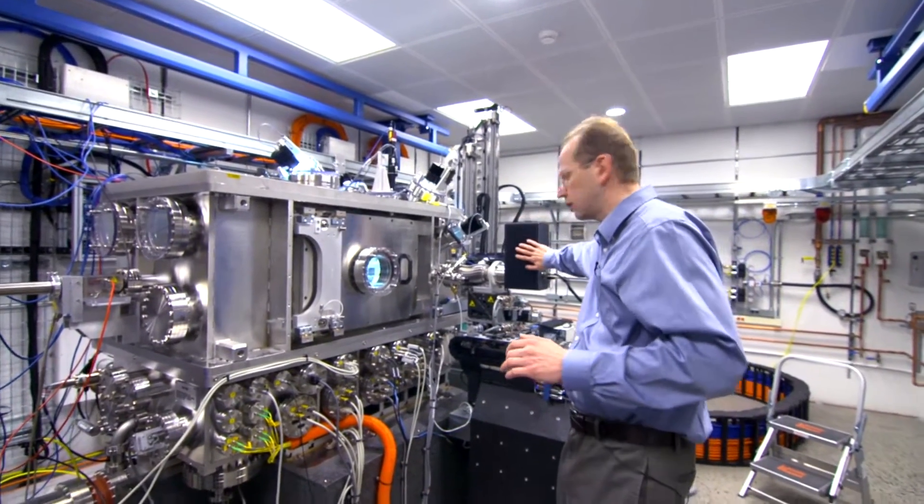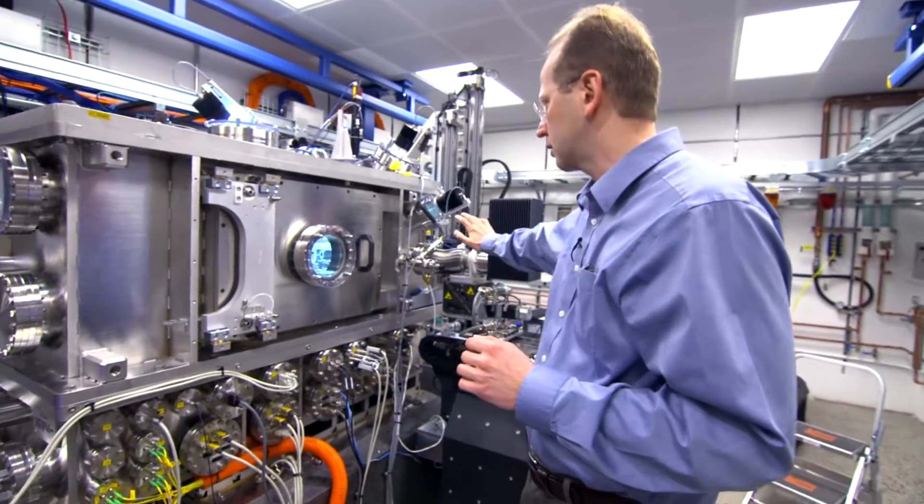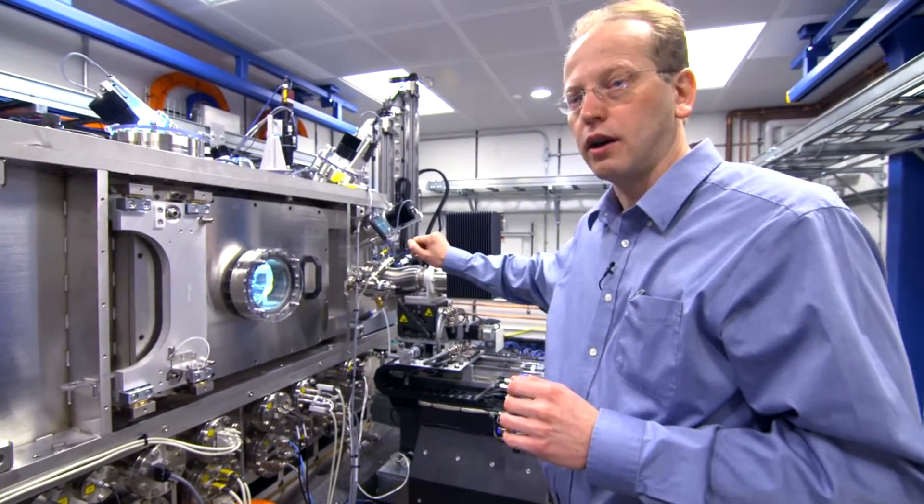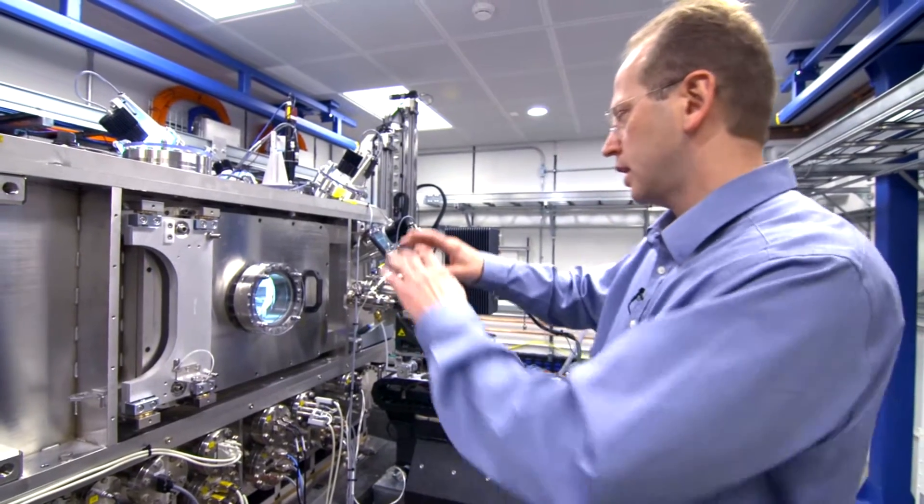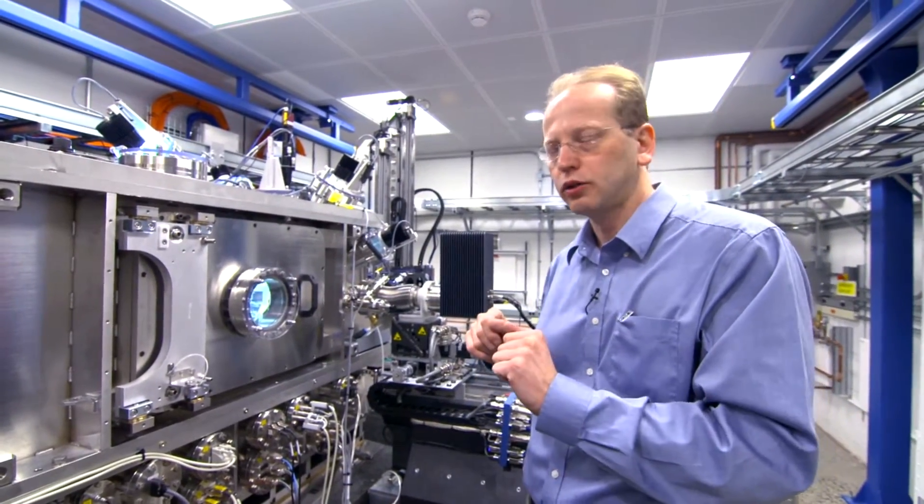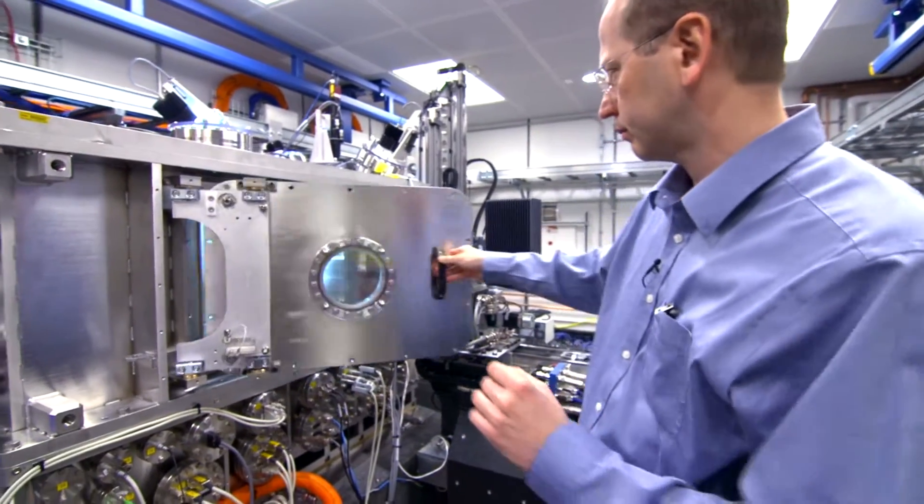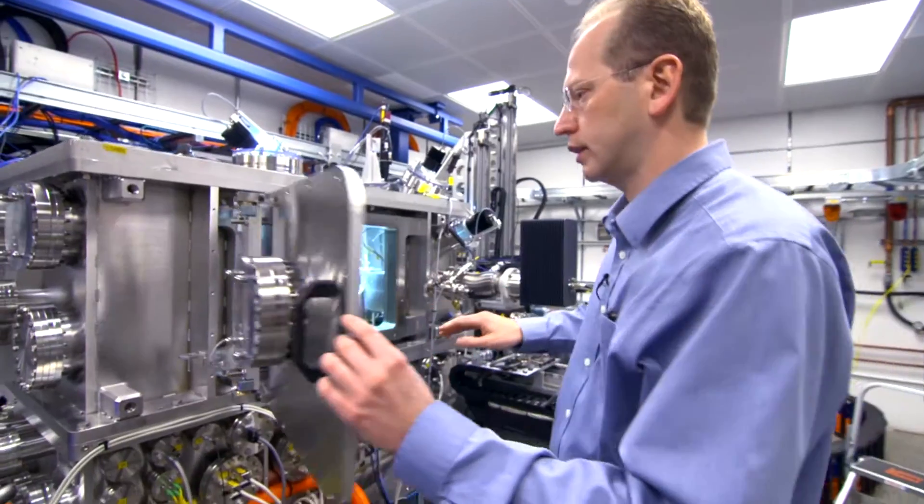This is one of the detectors, fluorescence detectors, which helps us to collect fluorescence signal from the sample which we study. And we have multiple doors to access the microscope, and this is one of the doors. So you can see we can open it and get inside.